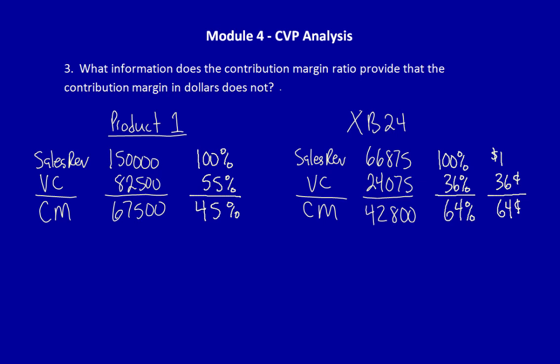For Product 1, for every $1 of sales, $0.55 are used to cover variable costs. And only $0.45 end up going into our pocket to cover fixed costs and our operating income.